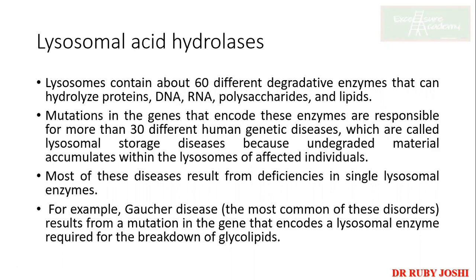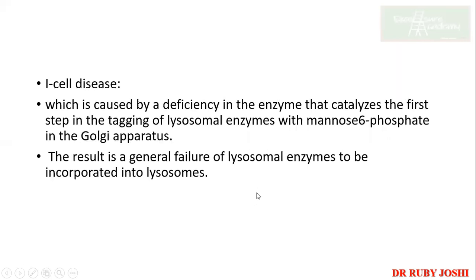Most of these diseases result from a deficiency of lysosomal enzymes. Gaucher disease is the most common of all these disorders — it results from a mutation in the gene encoding a lysosomal enzyme required for glycolipid breakdown. I-cell disease occurs because the mannose-6-phosphate tag is missing from the enzymes, so lysosomal enzymes are not targeted to the lysosome, resulting in accumulation of undegraded products.